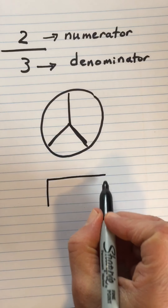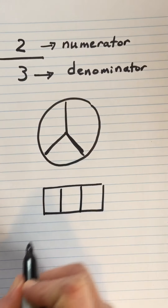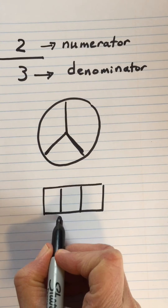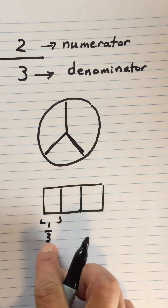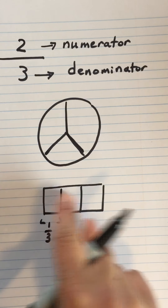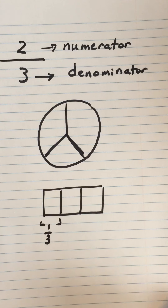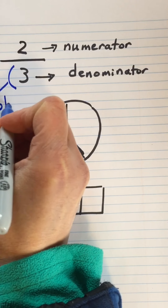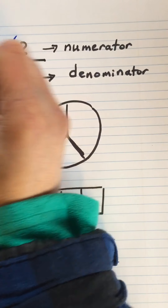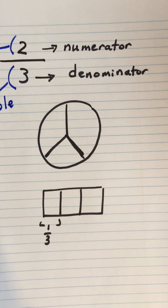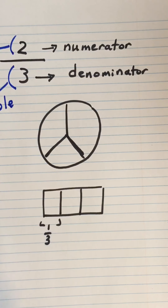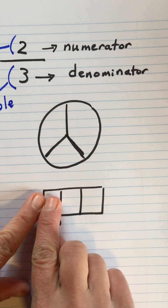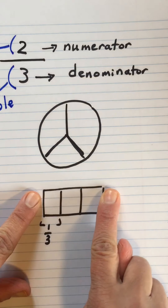Let's do a rectangle — one, two, three. One part is called a third, because it's one out of three. So I want to mention one more thing about what these numbers represent. This is the whole — all of it. This is the part we are talking about. Whole and part. So this third is a part, a little bit of the whole thing.